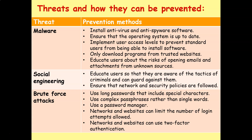Now let's cover a lot of the threats we've looked at and ways to prevent against them. Starting with malware — we could install various types of anti-malware or anti-virus software, ensure that operating systems are kept up to date, implement user access levels to prevent standard users from being able to install software, make sure people only download programs from trusted websites, and educate users about the risks of opening emails and attachments from unknown sources.